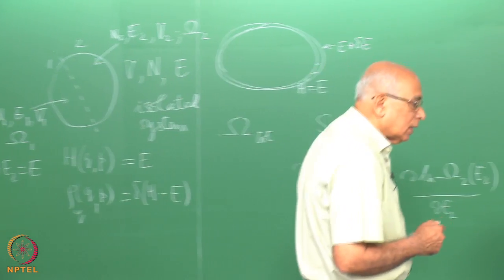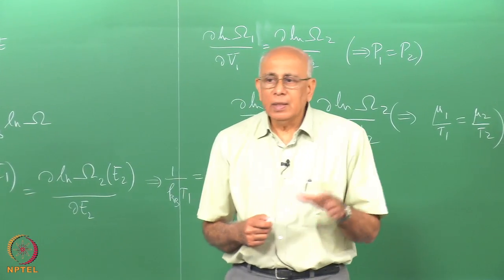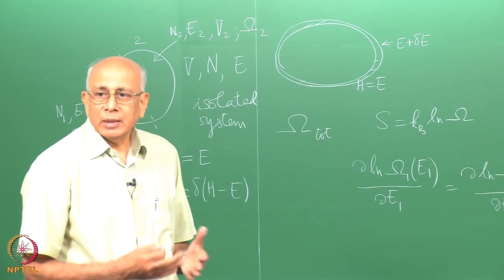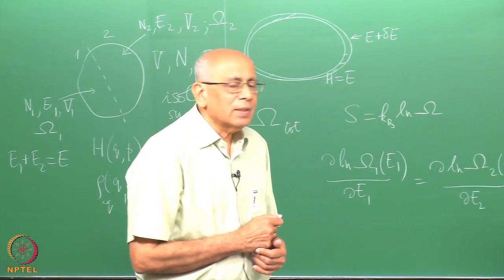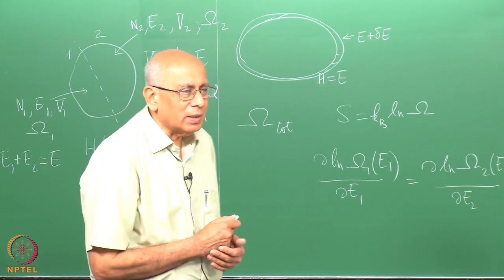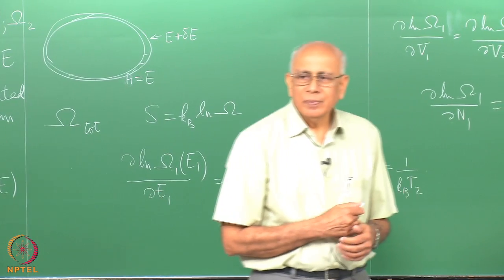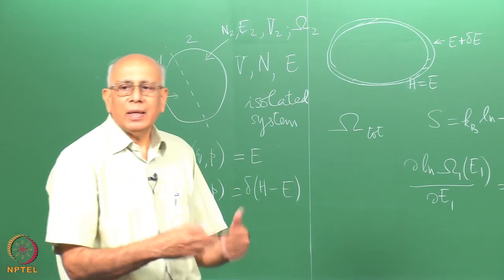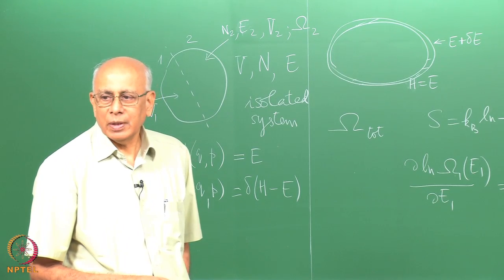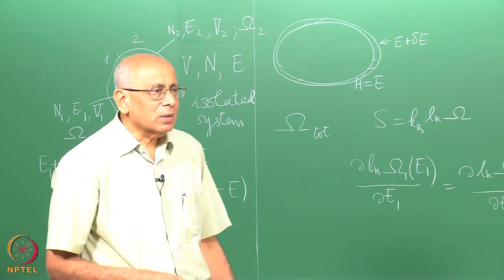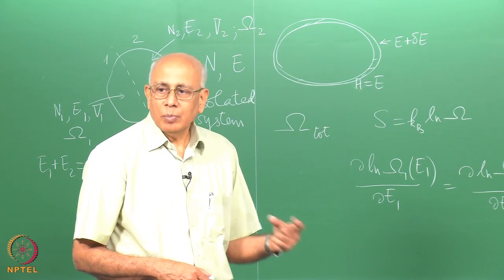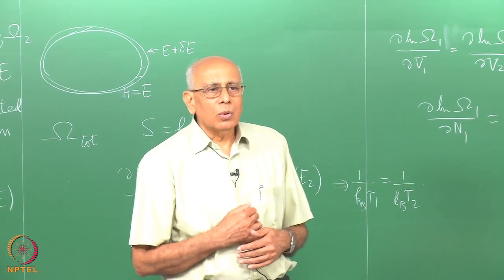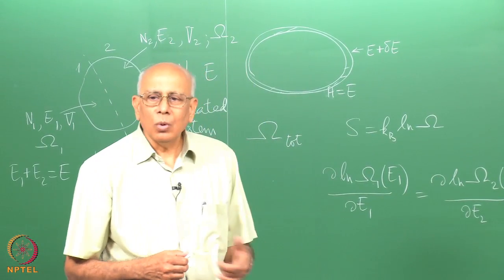In elementary physics you learn that a monatomic ideal gas has Cᵥ = (3/2)k_B T per particle and Cₚ = (5/2)k_B T. That came from knowing the equation of state PV = NRT. Once you know the equation of state — written down empirically — matters become different; you can compute specific heats. But for a real gas like a van der Waals gas, without the equation of state you don't know specific heats, susceptibilities, compressibility, or response functions a priori. However, thermodynamics does provide inequalities: stability implies Cᵥ cannot be negative, compressibility cannot be negative, and so on.